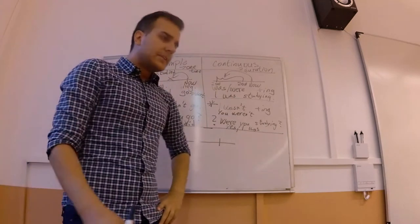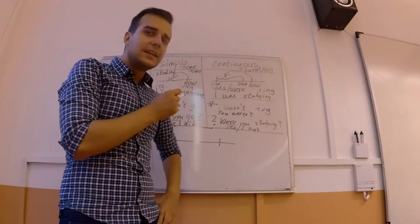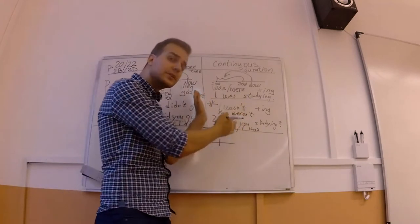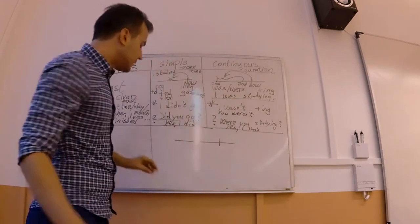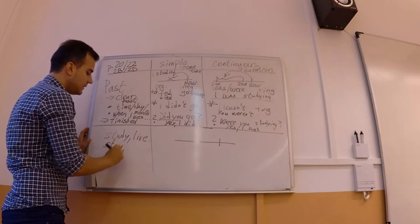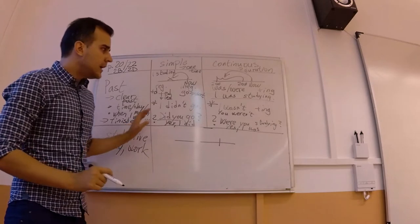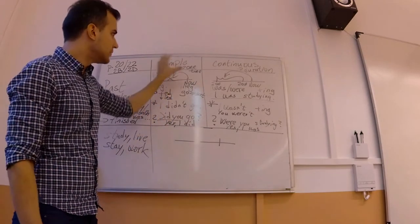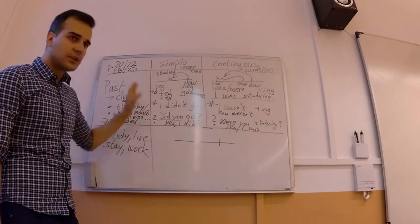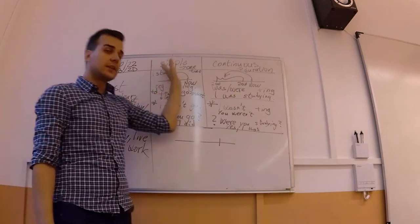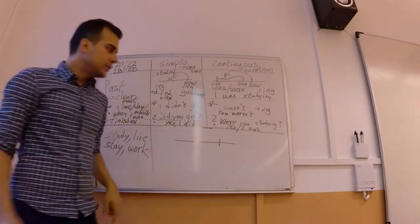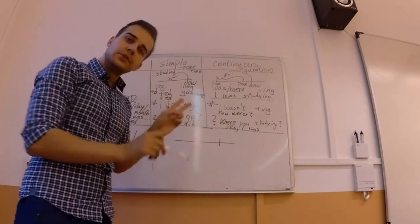Here's the thing — some verbs can be a little strange. For example, 'study' does not make a big difference whether you say it as a one-time simple action or as a duration. We need to remember that certain verbs — study, live, stay, work — it doesn't really matter if we use them in simple or continuous. So you cannot make a mistake with these verbs if you use the correct tense.